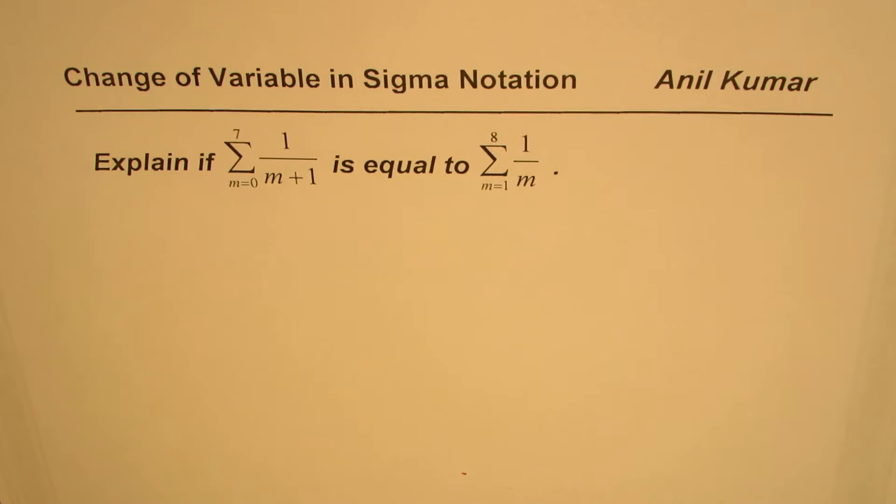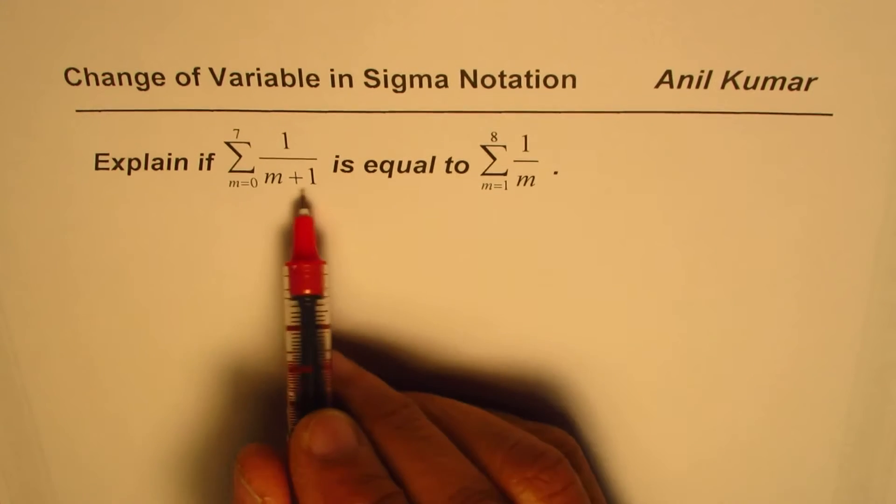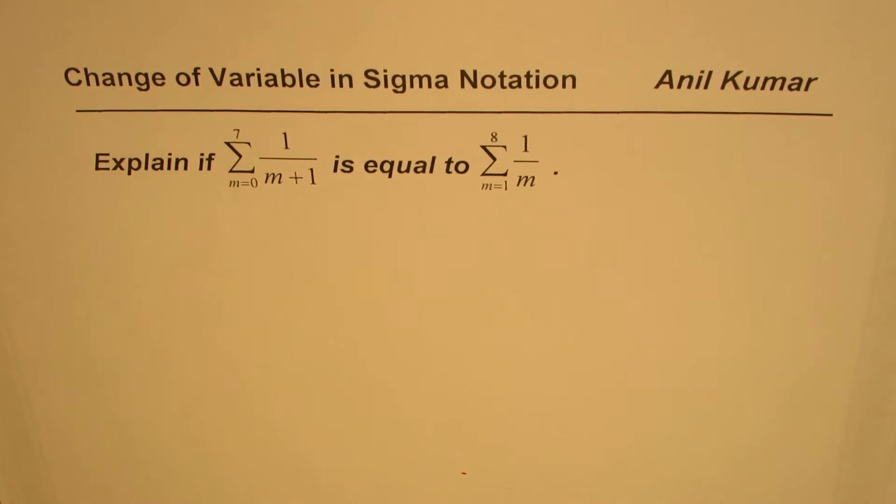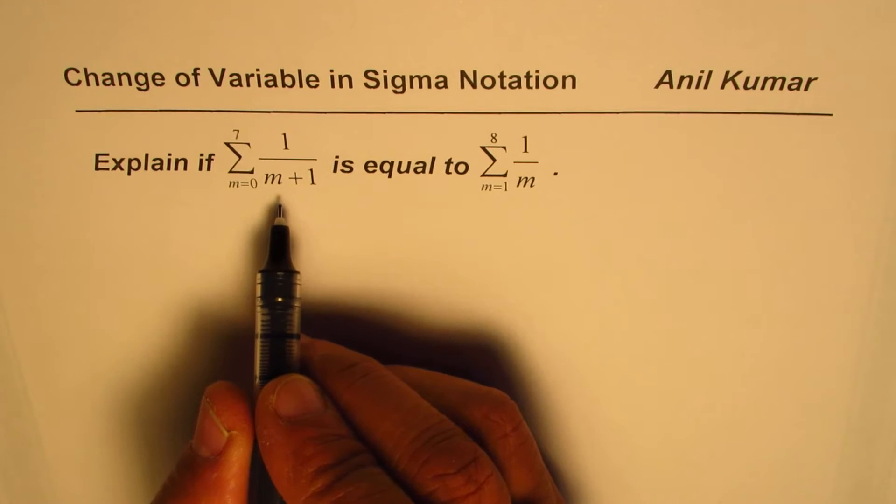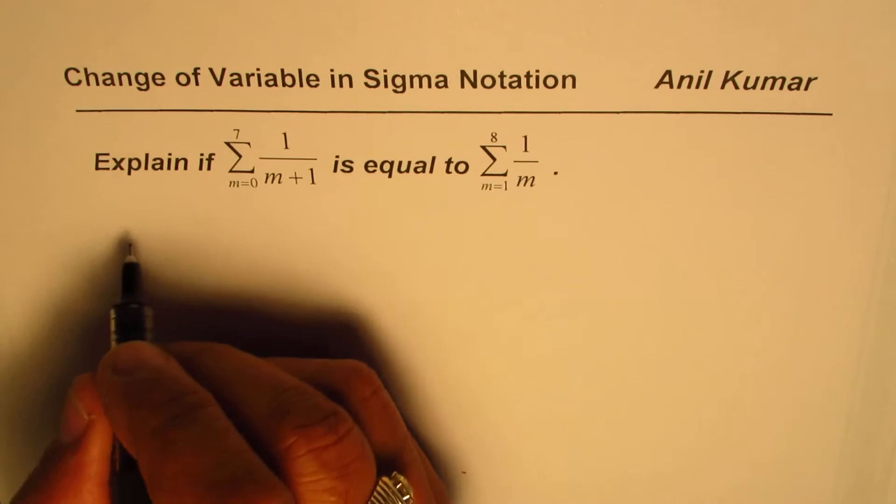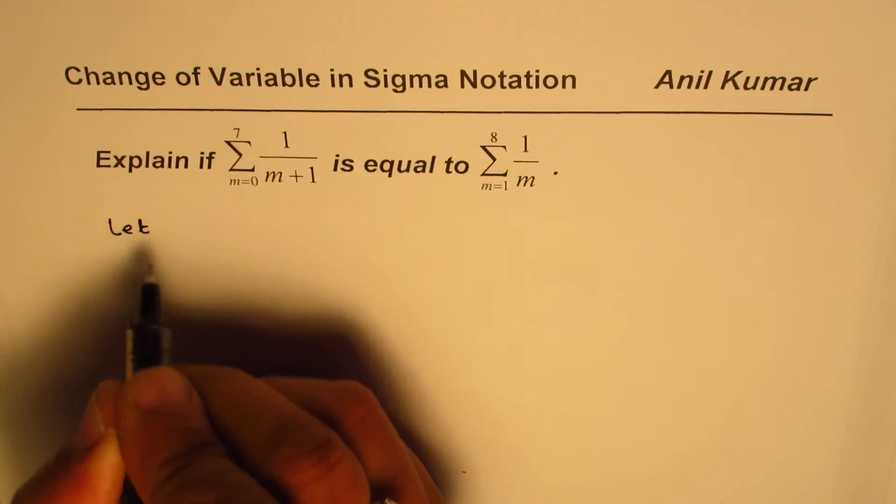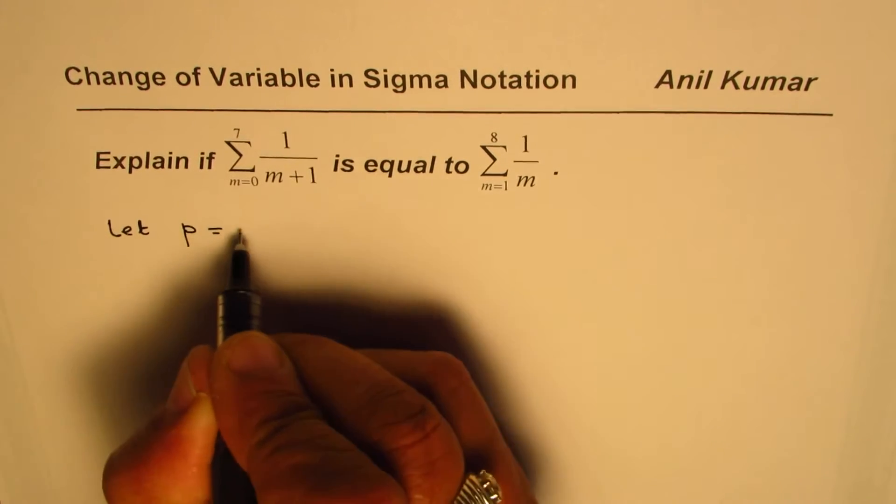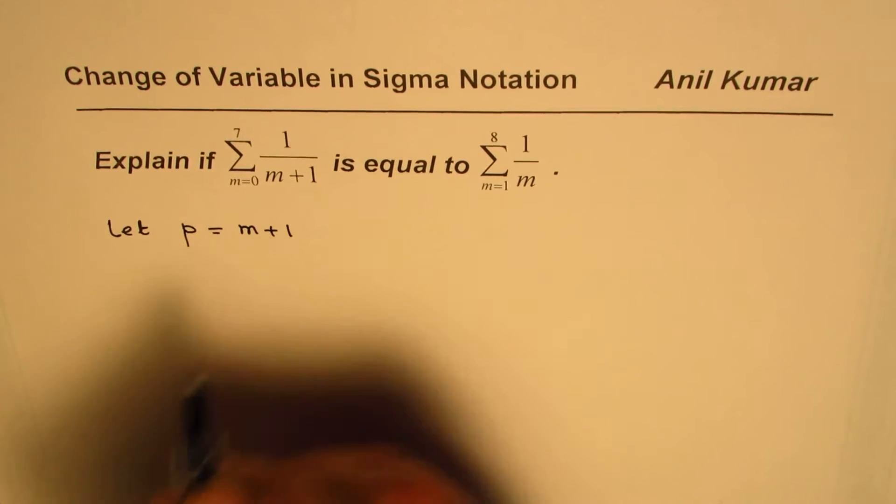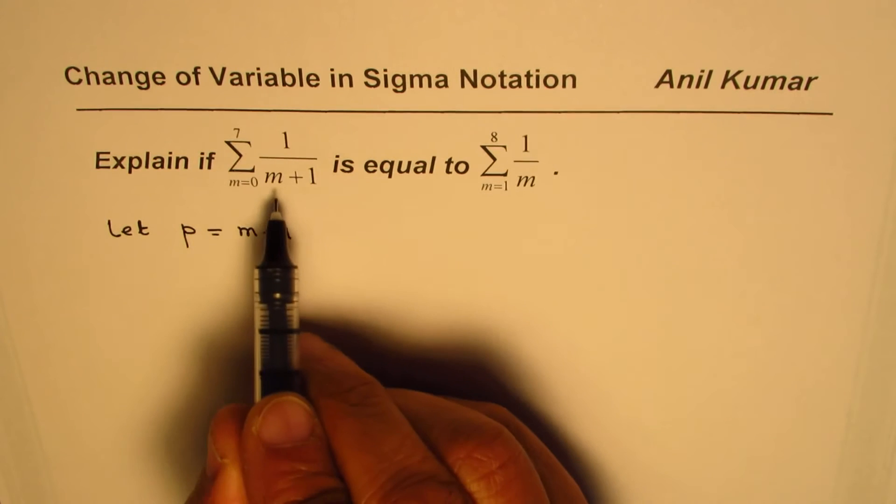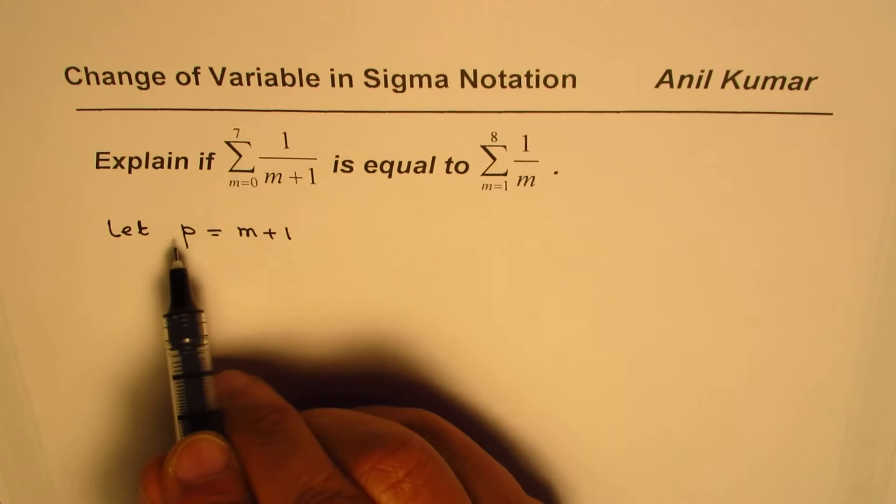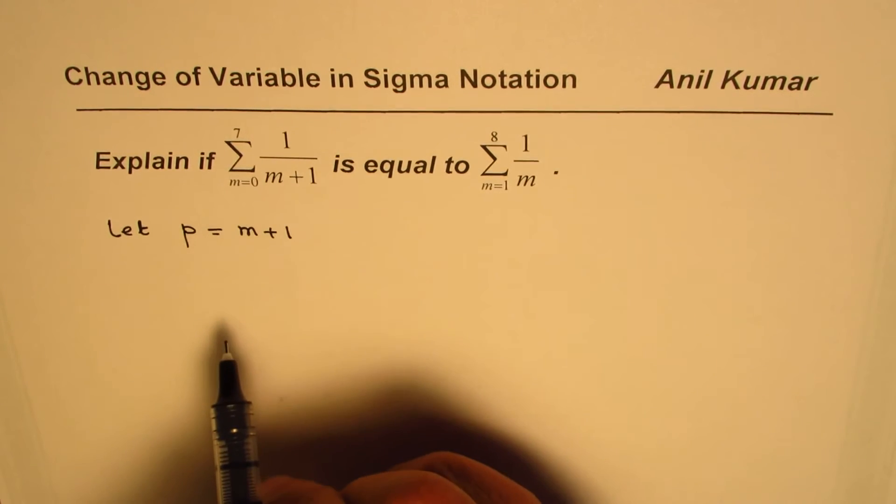We can do change of variable to solve such questions. What we will do here is let a variable, let's say p, equal to m plus 1, since we are seeing something like this has changed. So we'll change m plus 1 to another variable and then try to see.